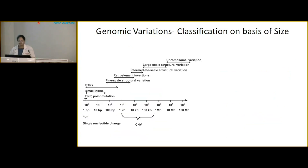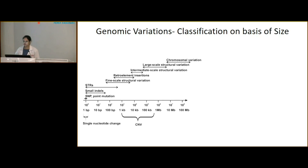We can classify genomic variation by size. A single nucleotide change is commonly known as a point mutation. There is also the indel term, used for deletions and insertions, which could be a few base pairs to a few kilobases. Then come structural variations ranging from a few kilobases to hundreds of megabases, called chromosomal variations. These include deletions, insertions, inversions, and duplications.